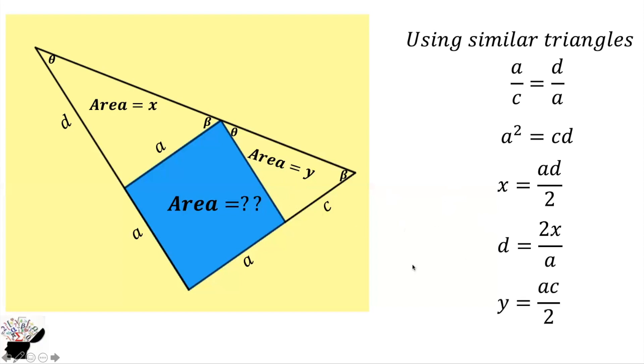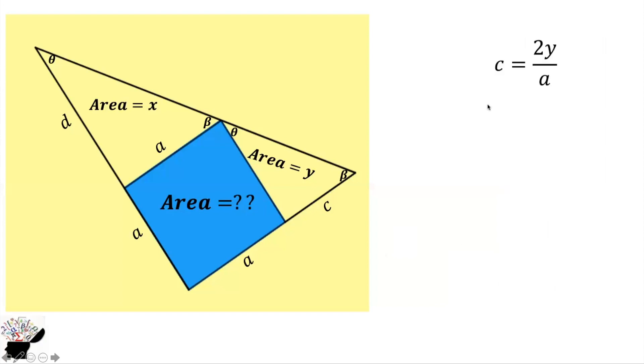Now we can say that from here, y is the area, half base times height. The base is c and the height is a, so ac divided by two. We know d, we have found d to be 2x over a, and we found c. That is, y equals ac divided by 2. Now c equals 2y divided by a. So now we have got c and d in terms of x and y.